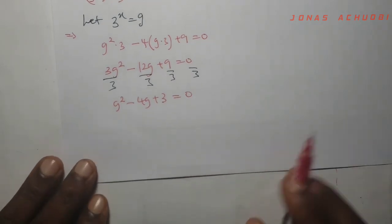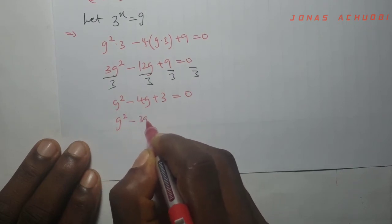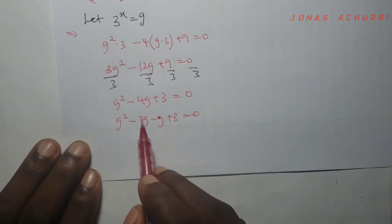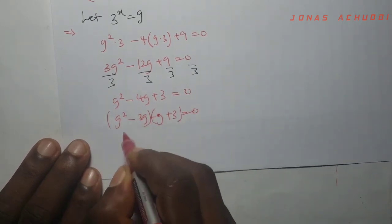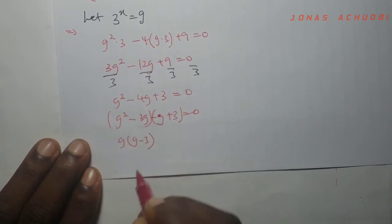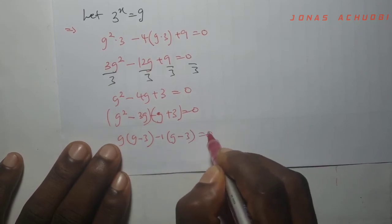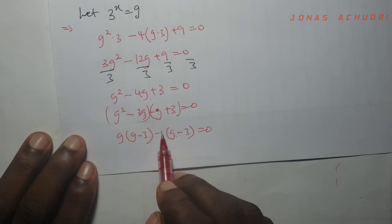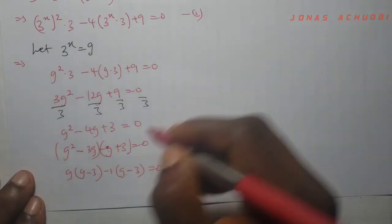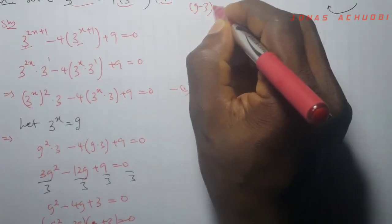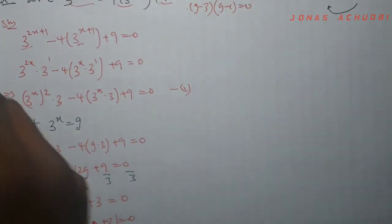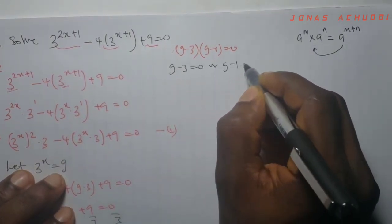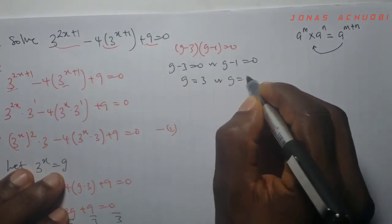I solve this quadratic by factorization. I write g squared minus 3g minus g plus 3 equal to 0, since minus 3 minus 1 is minus 4 and minus 3 times minus 1 is plus 3. Factorizing: g(g minus 3) minus 1(g minus 3) equal to 0, giving (g minus 3)(g minus 1) equal to 0. So g minus 3 is 0 or g minus 1 is 0, meaning g is equal to 3 or g is equal to 1.